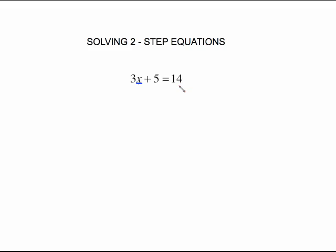What we need to do is work in the reverse order to get the x alone. Now think about what this is. This is 3 times x plus 5. The last thing that was done was 5 was added to this quantity over here. Since it was the last thing that was done, it's the first thing we need to undo.